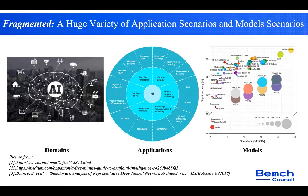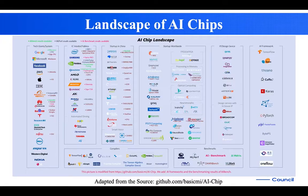The first challenge is fragmented. There is a huge variety of application scenarios and model scenarios. Even for image classification, there are many models with different parameter sizes and different accuracies. The landscape of AI chips also shows a variety of chips, frameworks, and compilers, which raise great difficulties for benchmarking.